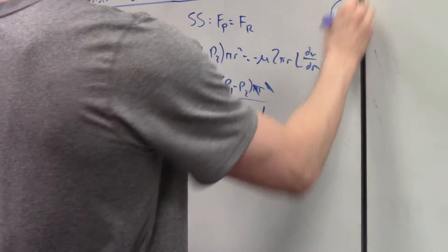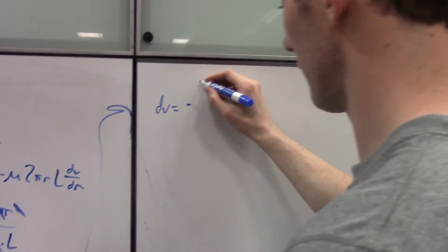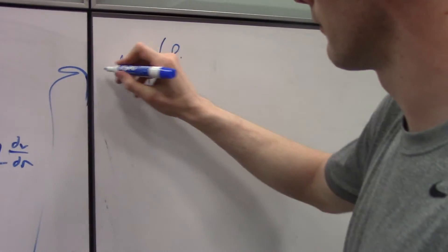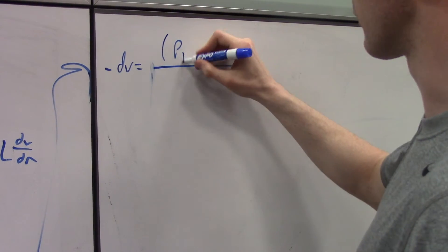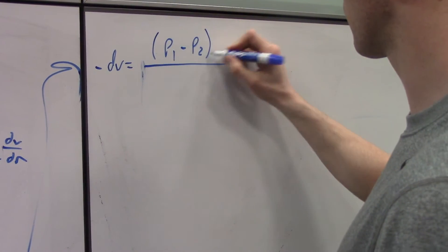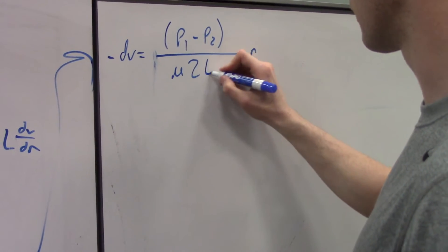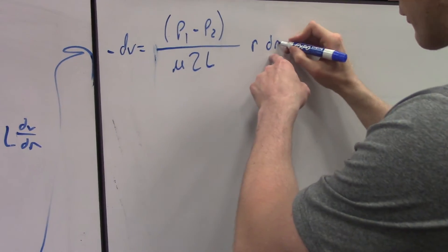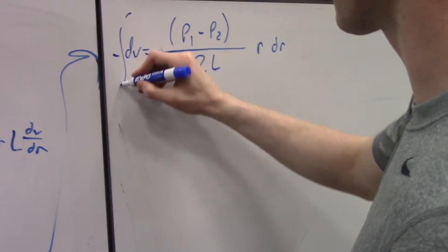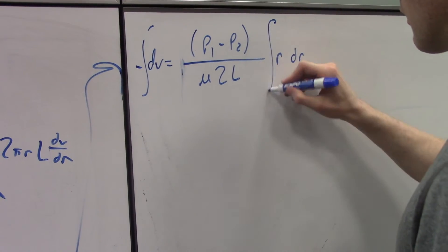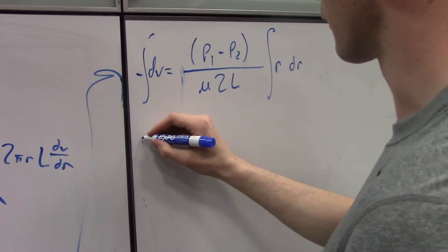And then the dR came up over here. And now we'll separate it and integrate. So I'm going to take this negative and leave it on the other side. So P1 minus P2 with the R out here over viscosity 2L, and then the dR. And then we integrate. And since these are all constant, we get outside the integral.